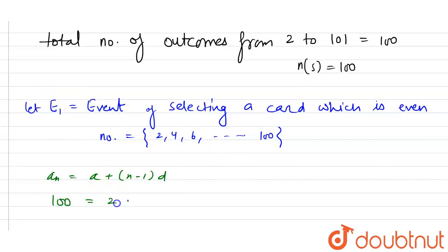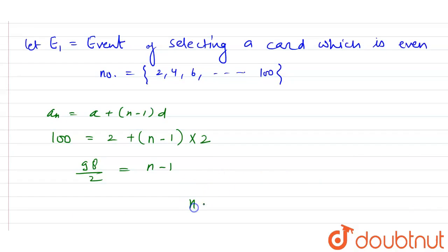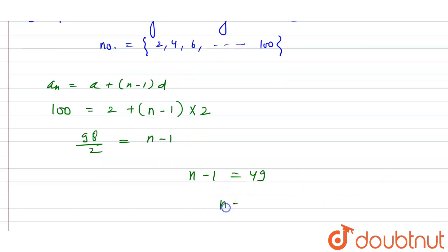Here aₙ is 100, so 100. Now a is 2, so 2 plus we have to find the number of terms. So n minus 1 and d is the common difference and common difference is 4 minus 2 is 2. Now this is equals to 100 minus 2, 98 by 2 is equals to n minus 1 or n minus 1 is equals to 49 or from here we get n is equals to 50.